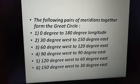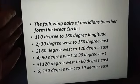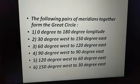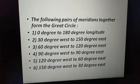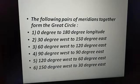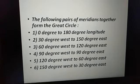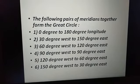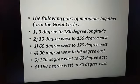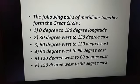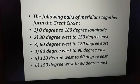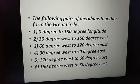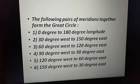Other examples of meridian pairs forming great circles: 30 degrees west with its opposite, 60 degrees west to 120 degrees east, 90 degrees west to 90 degrees east, 120 degrees west to 60 degrees east, and 150 degrees west to 30 degrees east. All these pairs of meridians form great circles. You need to memorize these.